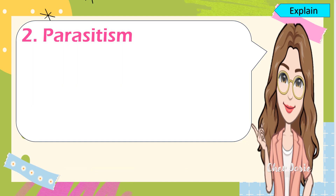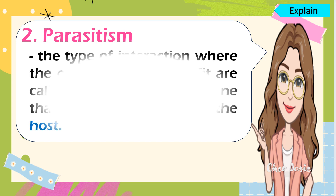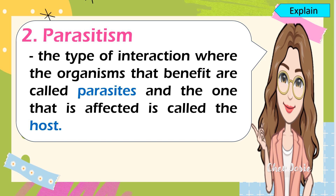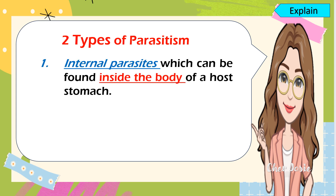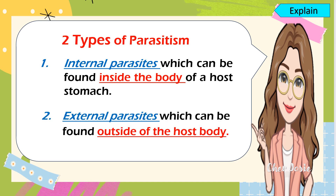Number two example of harmful interactions among living organisms is parasitism. When we say parasitism, it is the interaction where the organisms that benefit are called parasites, and the one that is affected is called the host. There are two types of parasitism. The first one is internal parasites, which can be found inside the body of the host. The second one is external parasites, which can be found outside the body of the host.